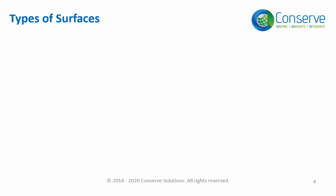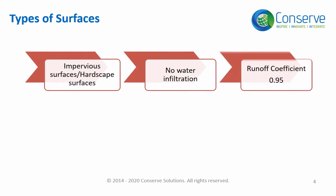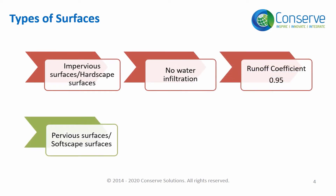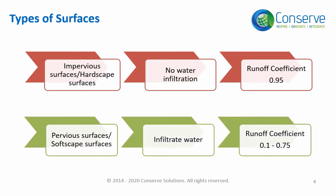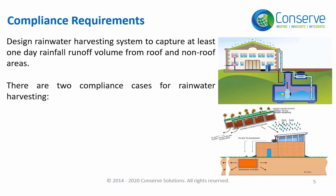Impervious surfaces are hardscape surfaces which cannot infiltrate water. Pervious surfaces are softscape surfaces which can infiltrate water. Impervious surfaces will have a runoff coefficient of 0.95, whereas pervious surfaces will have a runoff coefficient of 0.1 to 0.75 depending on the type of surface. The compliance requirement of this credit and prerequisite is based on the water table level in the project location.